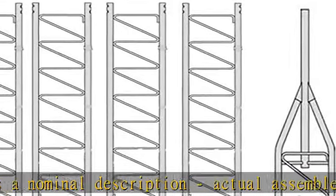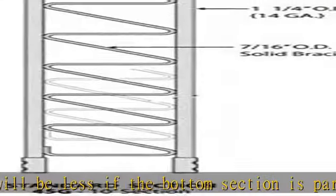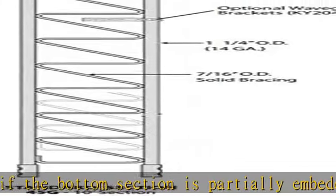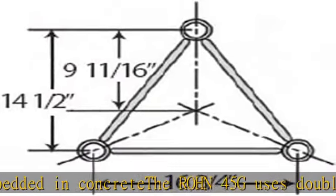proven to be the best method of joining tower sections for sturdiness and dependability. See Ron 45 G guides for specifications and installation requirements. 1-1/4 inch OD, 14 gauge legs, 7/16 inch OD solid bracing, completely hot dipped galvanized after fabrication.